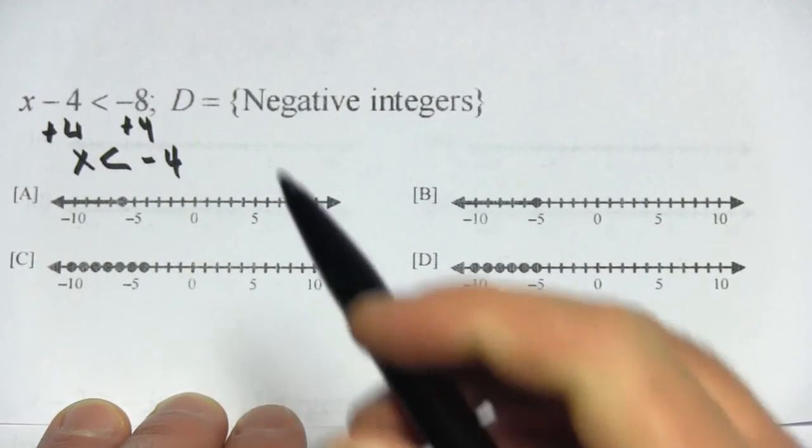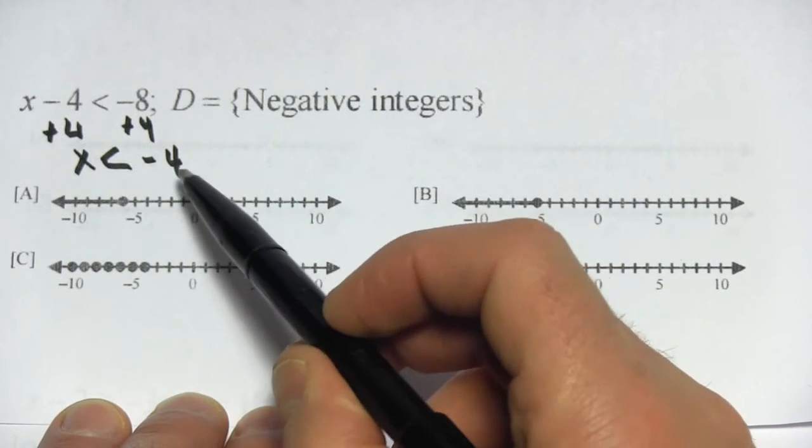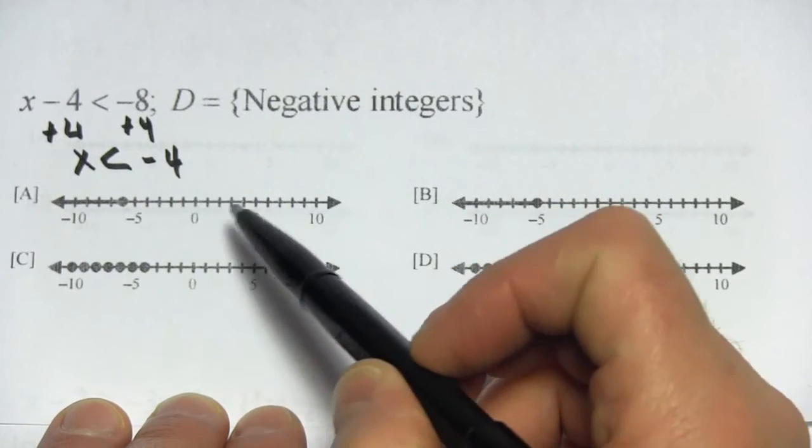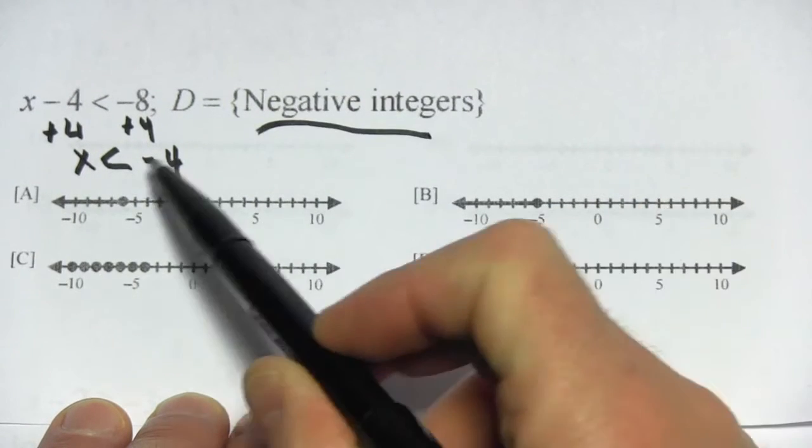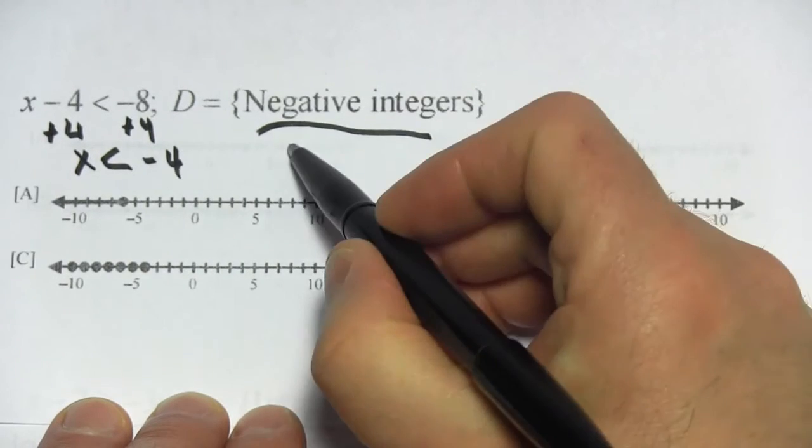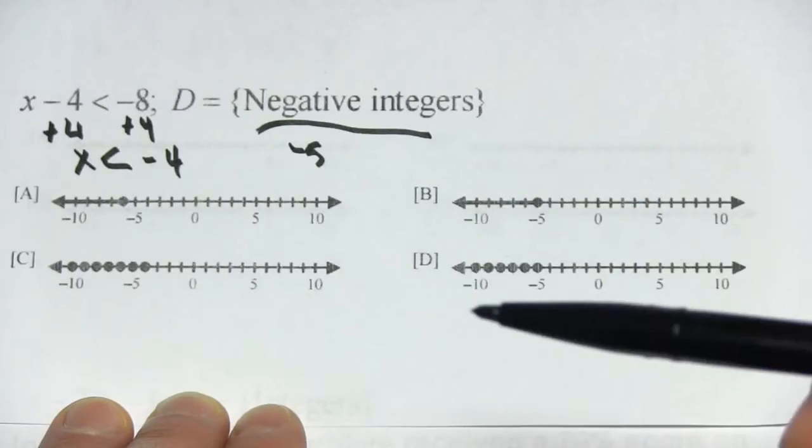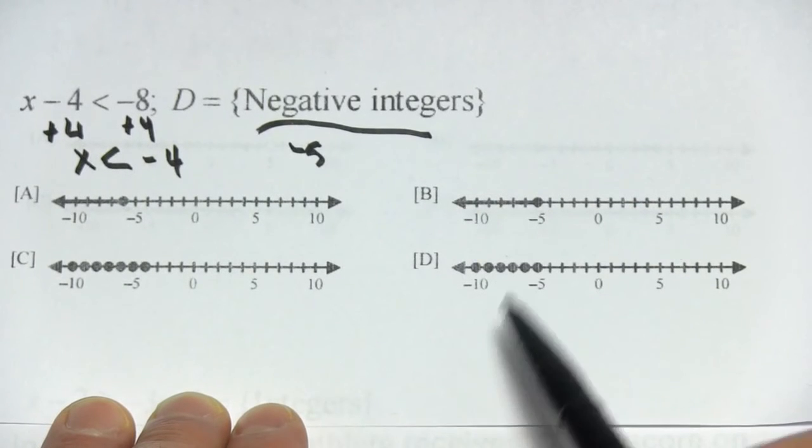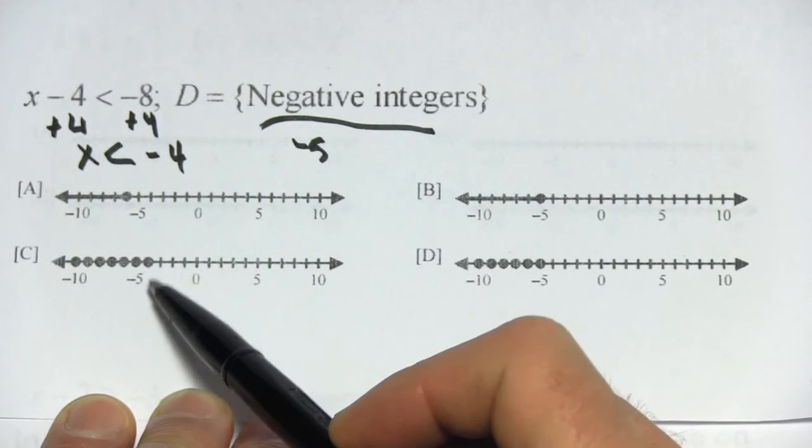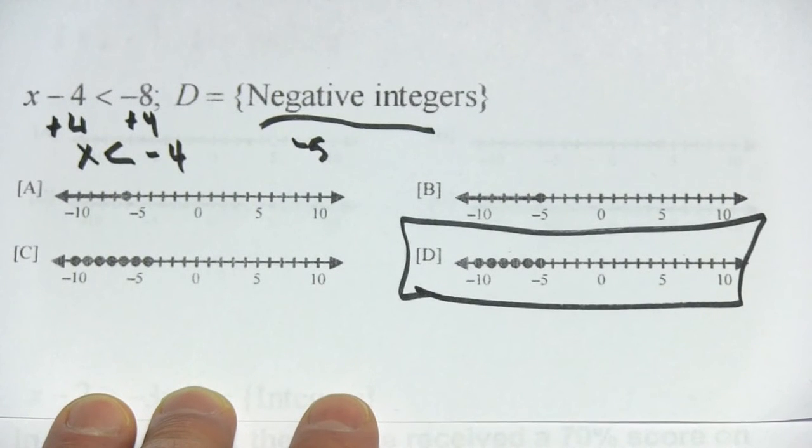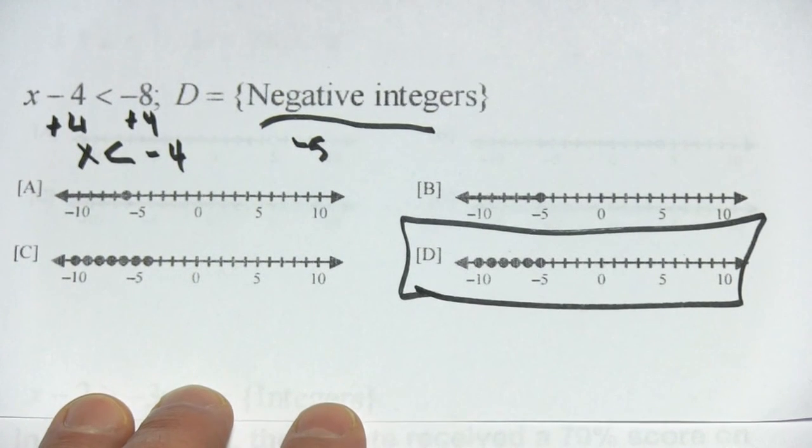Now this one's tricky. Less than negative 4 does not include negative 4. So the very first negative integer that's less than negative 4 would be negative 5. And then we would go down to negative 6, negative 7. So really this graph should start at negative 5 and not at negative 4. So this is our answer. So that is a little bit of work with graphing inequalities on the number line.